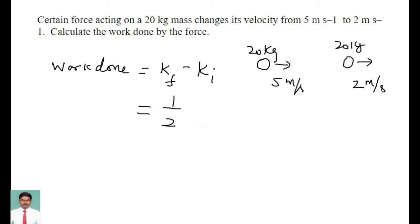So here I am using half m into v square. V is the final velocity and minus half m into v square. Instead of v I am going to write u square here. U represents the initial velocity.